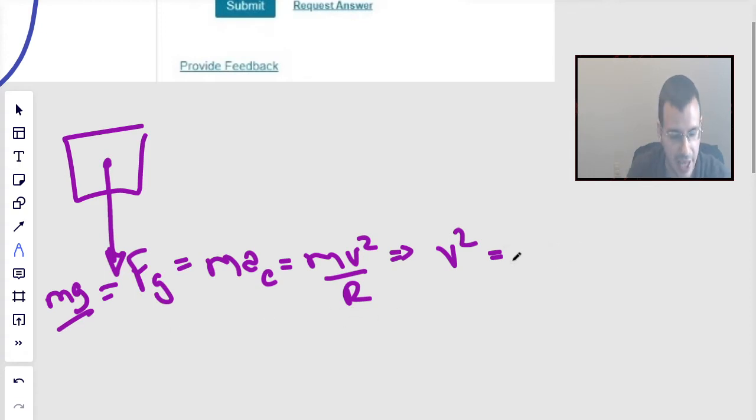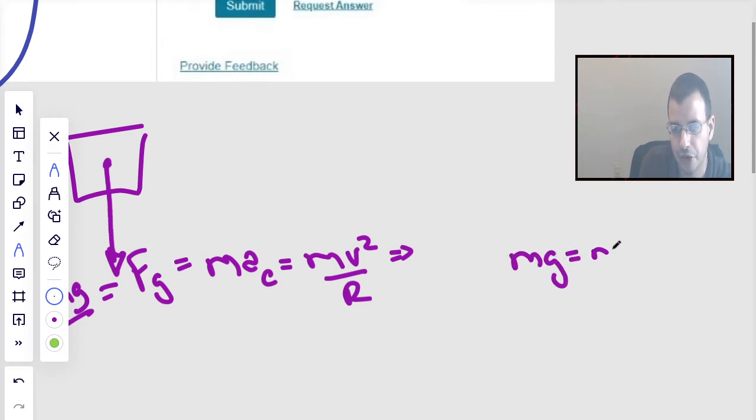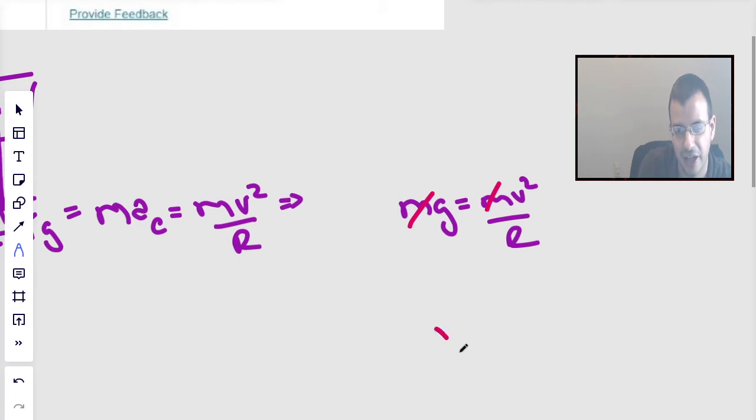Mass-gravity equals mv squared over r. r is radius. m's cancel. And we find that velocity squared equals g times r. Therefore, critical velocity equals square root of g times r.